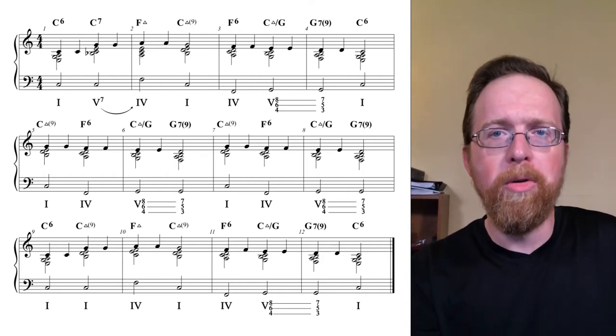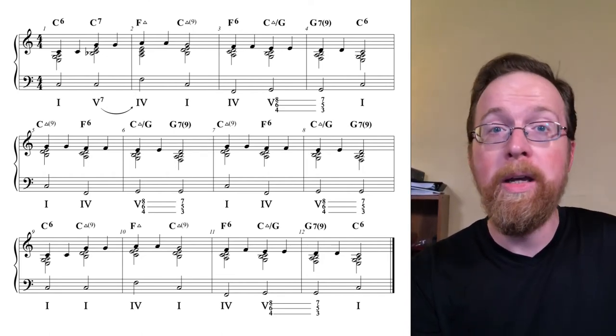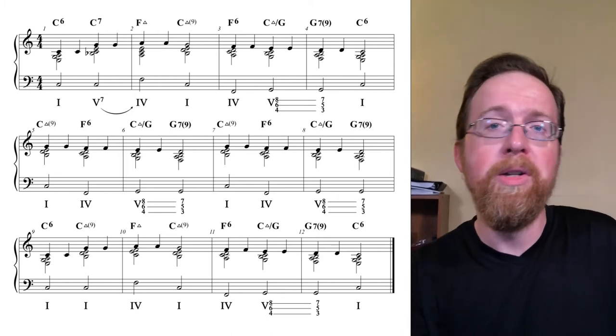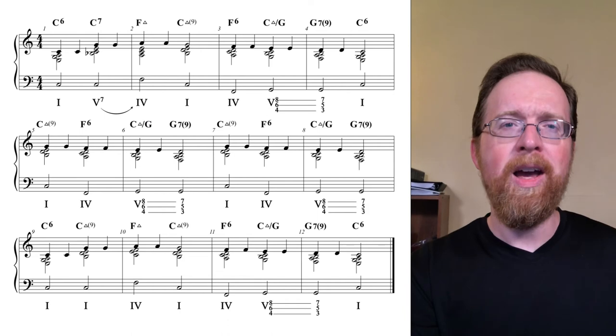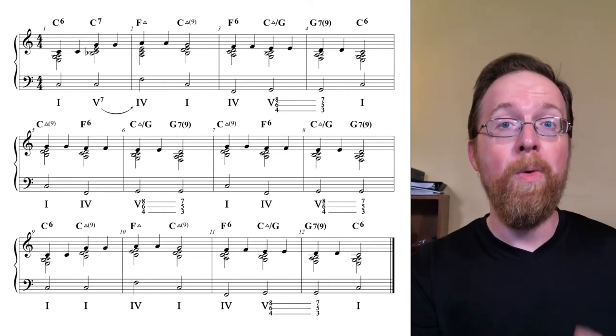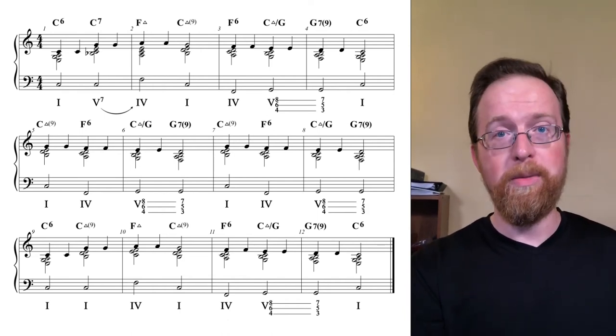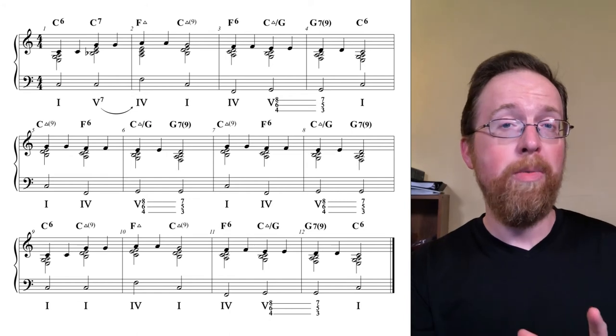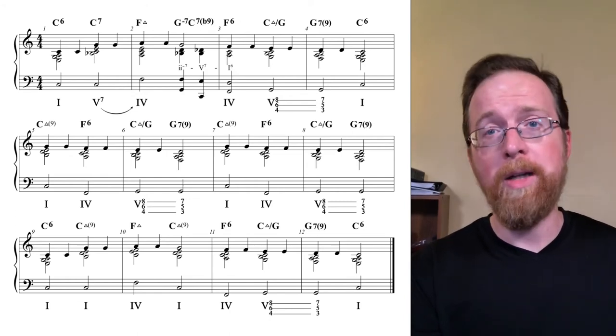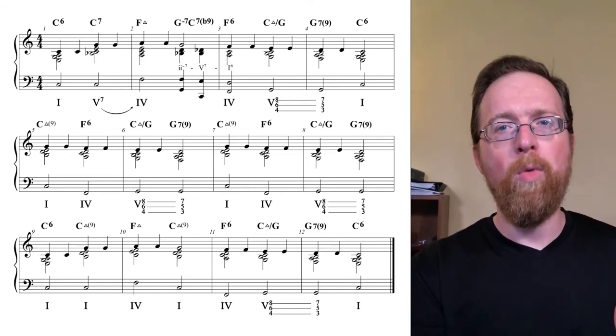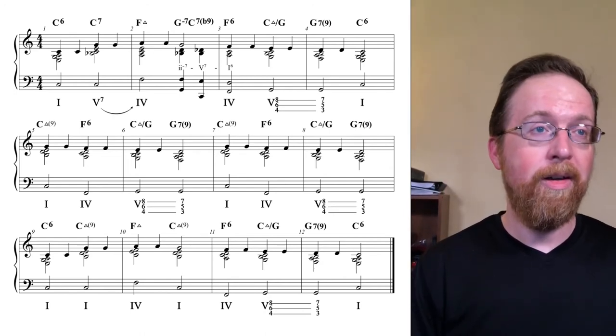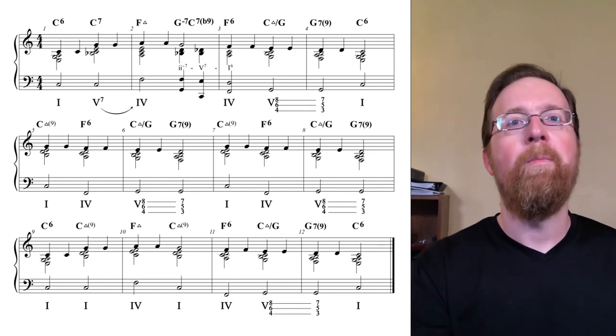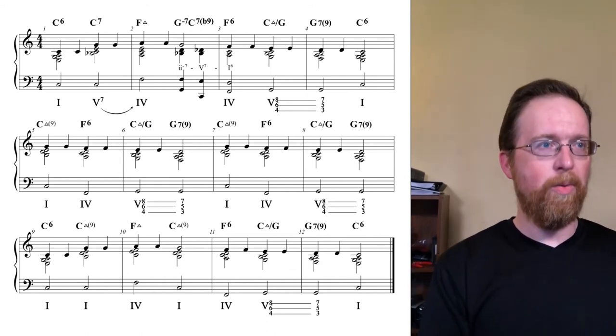Now I might do something similar in measures two to three. C again is leading to F, but instead of only converting the C into the dominant, this time I'm going to substitute a 2-5 progression in its place. So F is going to be our harmonic goal, our temporary tonic. So a 2-5-1 in the key of F is going to be a G minor 7, then a C dominant going to F.